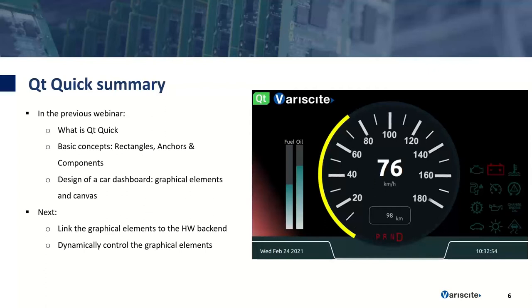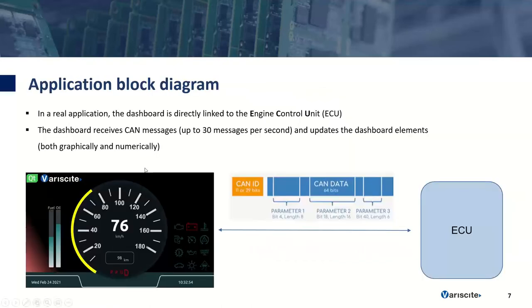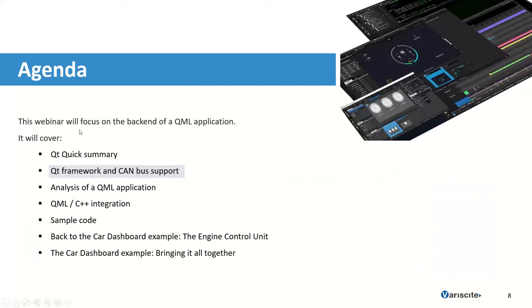Let's understand the backend in a real application. In a real dashboard you would have an engine control unit — something in a car that provides CAN messages, even up to 30 messages per second, to update the dashboard. We receive information from sensors and devices that will be used to update the graphical interface. Let's understand how the QtQuick framework and the canvas can be included in this perspective.